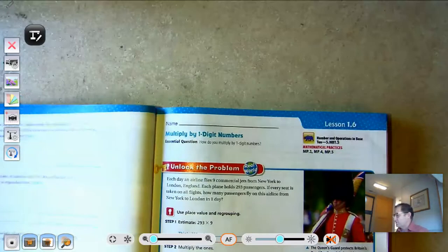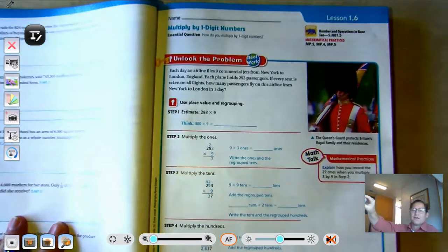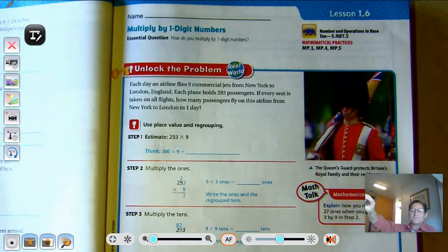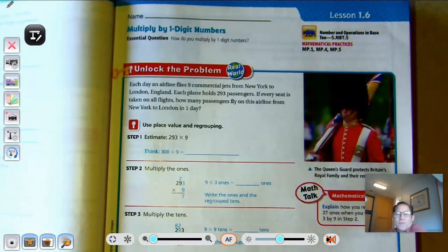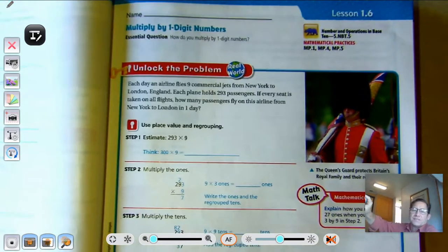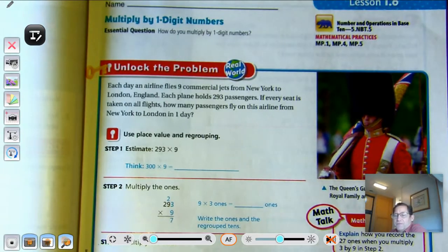Hello, everybody. So today we're going to be working on Lesson 1.6, Multiply by One-Digit Numbers. We are on page 27 of the 5th grade GoMath textbook. And so our essential question today is, how do you multiply by one-digit numbers?